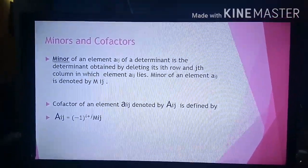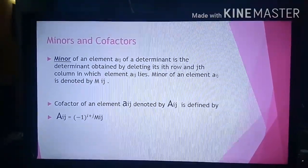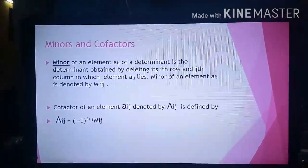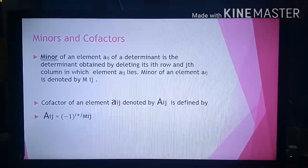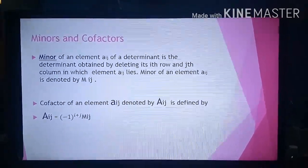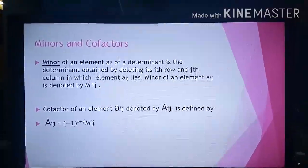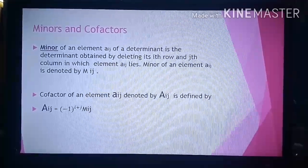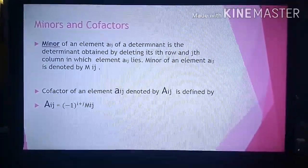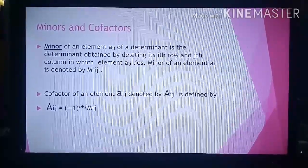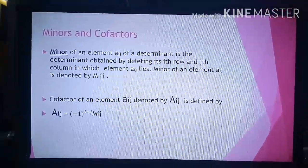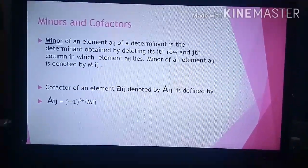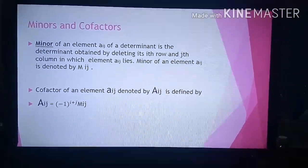Now I will explain minors and cofactors. The minor of an element aij of a determinant is the determinant obtained by deleting its i-th row and j-th column. The minor of element aij is denoted by Mij. The cofactor of element aij is denoted by Aij and is defined as Aij equals (minus 1) to the power i plus j, into Mij.